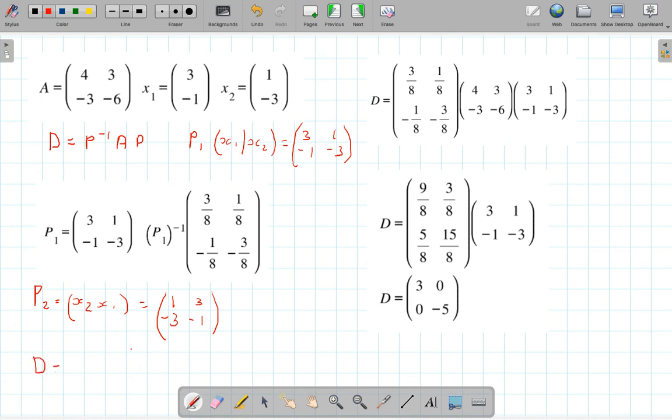And the second value you should end up with is minus 5, 0, 0, and 3.